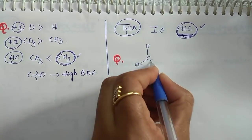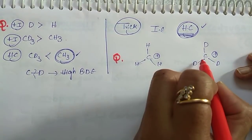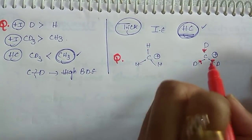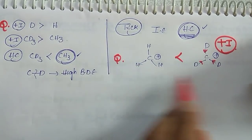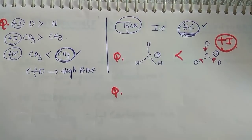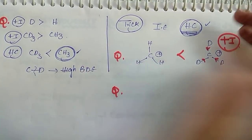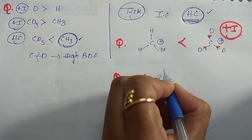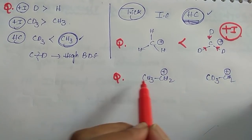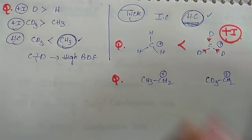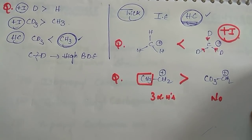Consider: a carbon with 3 hydrogens as carbocation (CH₃⁺) vs. a carbon with 3 deuteriums (CD₃⁺). Which is more stable? Deuterium is a better electron-releasing group (+I effect), so CD₃⁺ is more stable here — this is due to inductive effect only, because there is no sp3 alpha carbon connected to exhibit hyperconjugation. Now consider CH₃CH₂⁺ vs. CD₃CH₂⁺. Here, hyperconjugation is possible because sp3 alpha carbons are present. CH₃CH₂⁺ has 3 alpha hydrogens; CD₃CH₂⁺ has no alpha hydrogens on the CD₃ side — so CH₃CH₂⁺ is more stable.